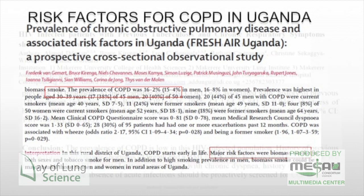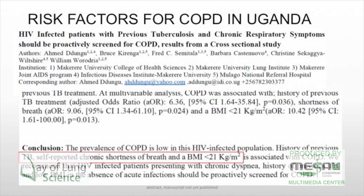I also looked at COPD patients in the Mulago Joint AIDS Program — people infected with HIV. The main risk predictors of COPD in this population were TB, shortness of breath as reported by most patients, and a low BMI. The predictors differ depending on the population that you're looking at, and that's something we should pay attention to.